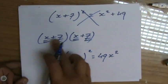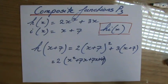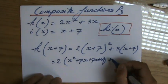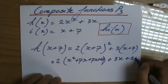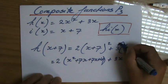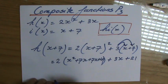So what did I just do? I did x times x, x times 7, 7 times x, 7 times 7. Now expand already this part, which is 3x plus 21, and don't forget, 2 times everything as well.